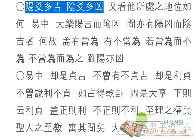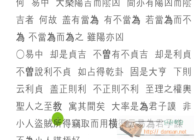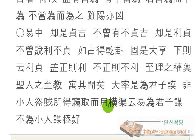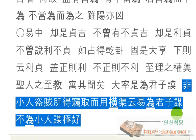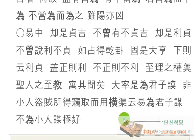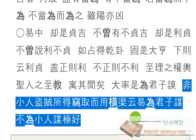개정즙이요 불정즙풀리는 시리지권년이, 성인지지지교의 우기간의다. 대솔시위 군자모욕 피소인 도적엠 소득철취용이니, 흰거운 역위 군자모욕 불위 소인모의 극호니라. 그것까지 딱 뜨시죠.